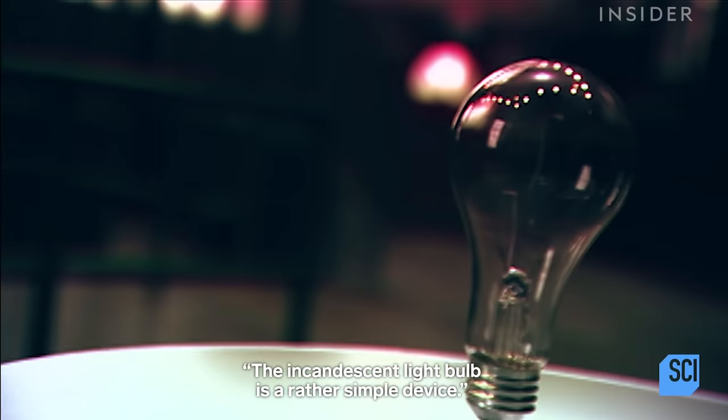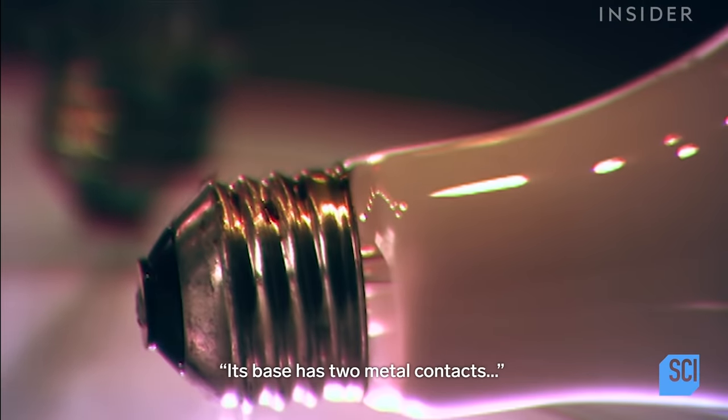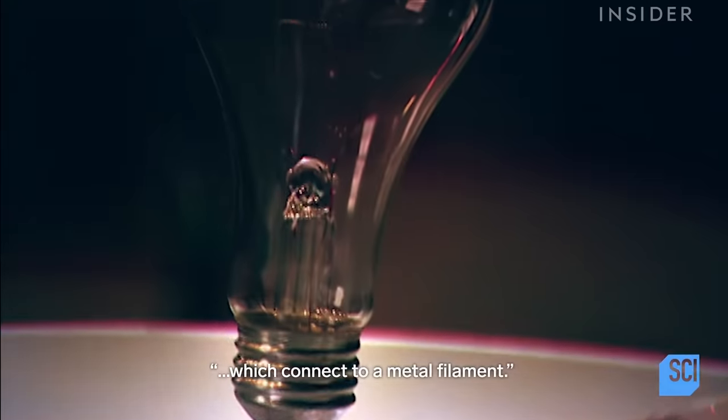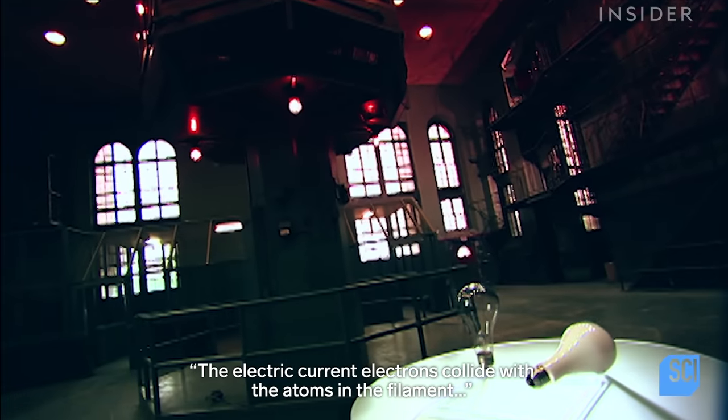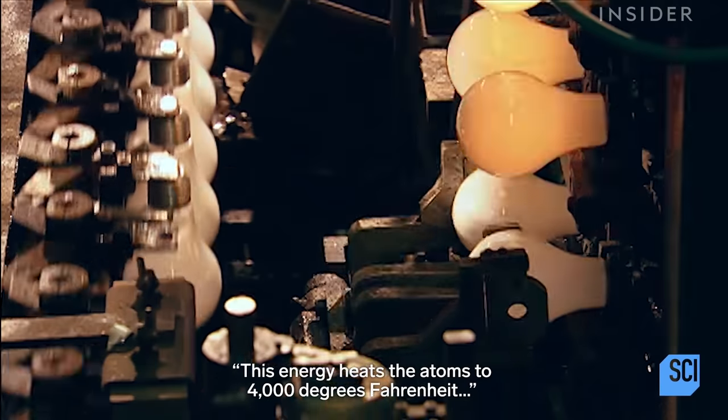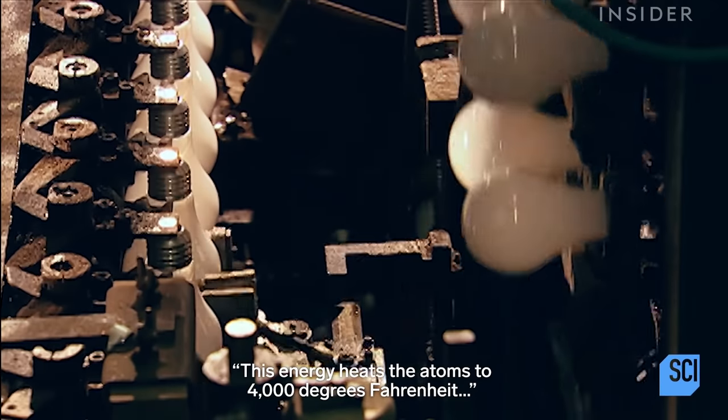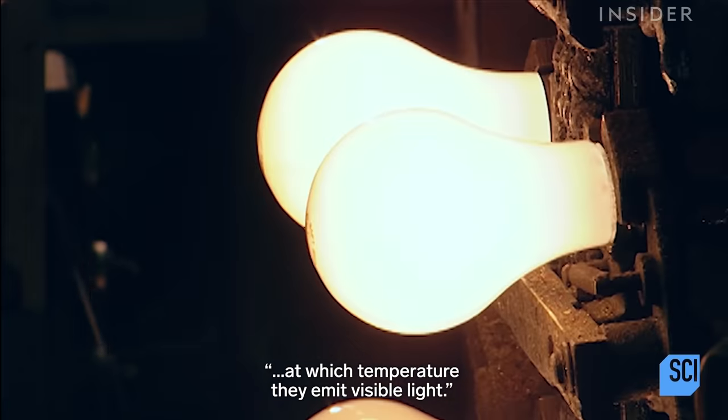The incandescent light bulb is a rather simple device. Its base has two metal contacts which connect to a metal filament. The electric current's electrons collide with the atoms in the filament, making them vibrate. This energy heats the atoms to 4,000 degrees Fahrenheit, at which temperature they emit visible light.